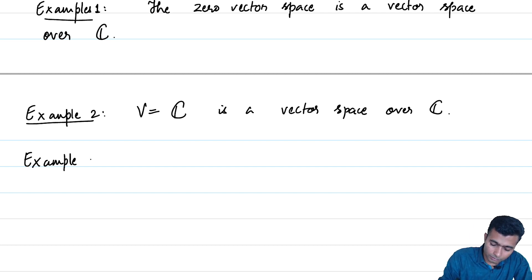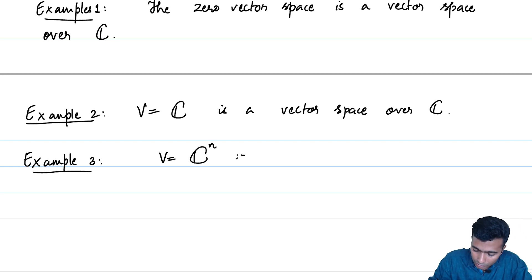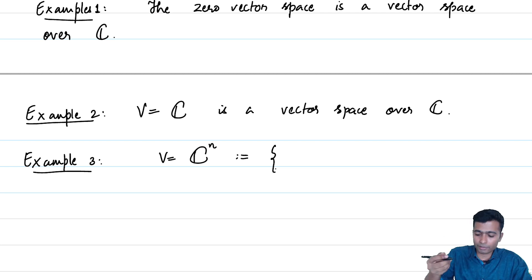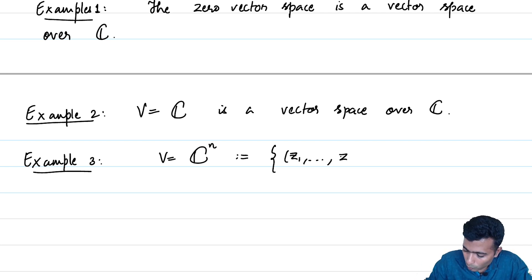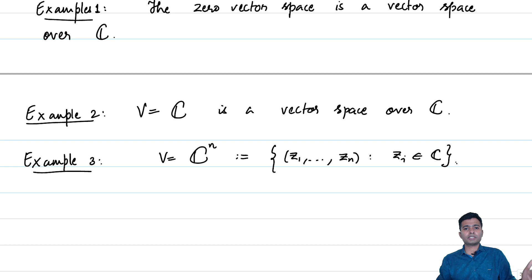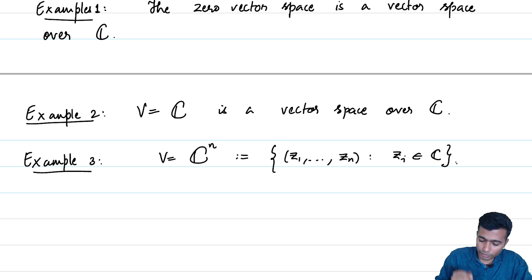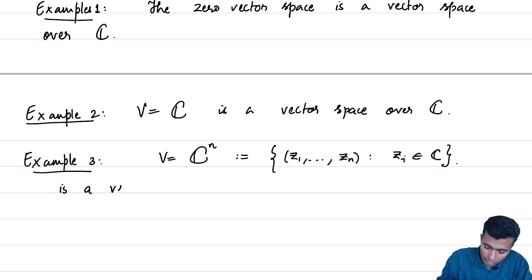The next example is C^n, the Cartesian product of C with itself n times. This consists of tuples (z_1, …, z_n) where each z_i is a complex number. Addition is defined component-wise and scalar multiplication is also defined component-wise. This is a vector space over C.